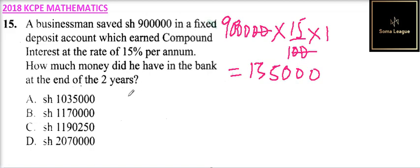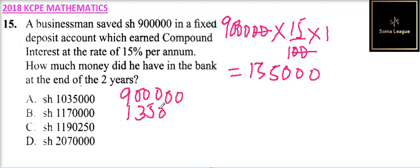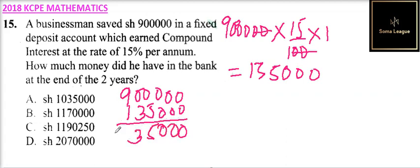In the second year, you add 900,000 plus 135,000 — what was earned in the first year. When you add these, you get 1,035,000. So this is the amount that you earn interest on in the second year.